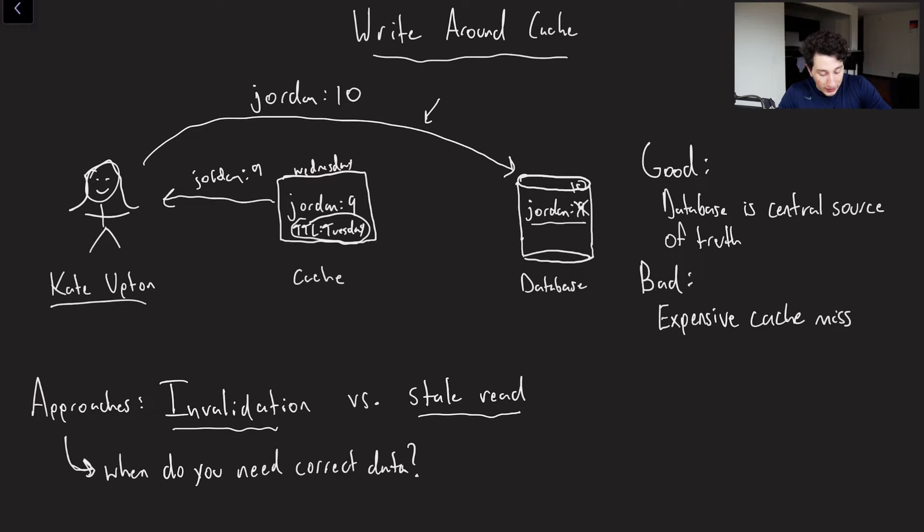Kate Upton is going to make another read request from the cache, the cache is going to say, I don't have it. And then it's going to ask the database, which is going to say Jordan is a 10. So that's one option. And it's pretty simple. It's just we get a stale read until our data expires.